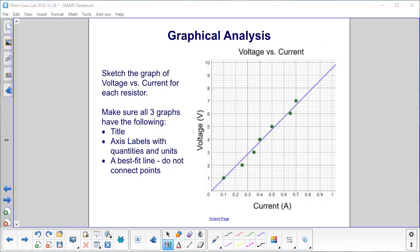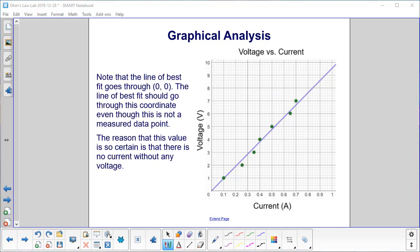The student should sketch the graph of voltage versus current for each resistor. Make sure each graph has a title, and then the axis labels with the units, and then a best fit line. Do not just connect the dots. Note that the line of best fit goes through the point zero, zero, even though that was not a measured data point. The reason we can do this is that there is no current without any voltage.